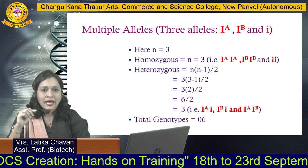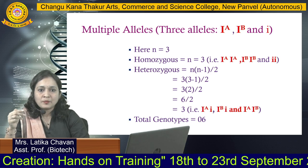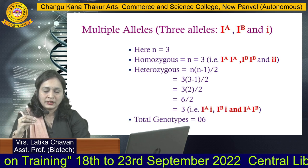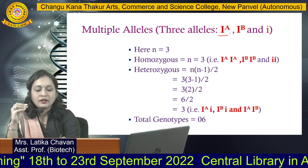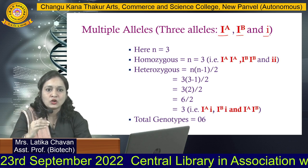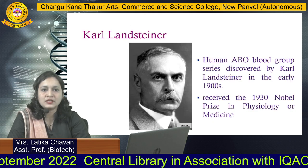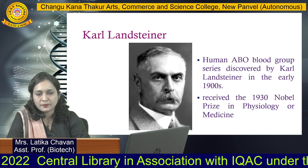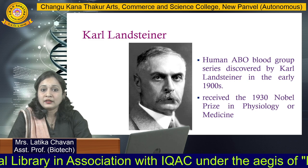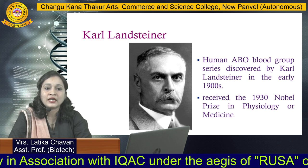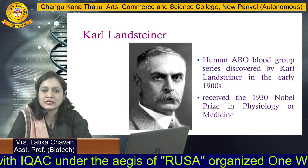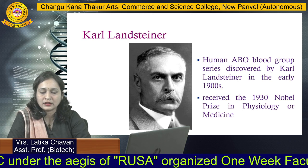This is an important example of multiple alleles. We are going to study three different alleles — IA, IB, and small i — which control different possible genotypes in humans. This scientist, Karl Landsteiner, discovered the ABO blood group system in humans and received a Nobel Prize in Physiology and Medicine in 1930.